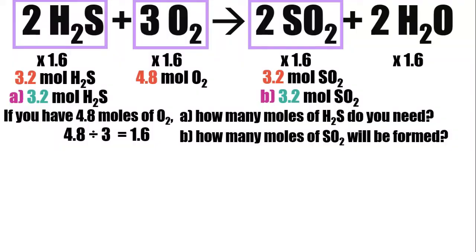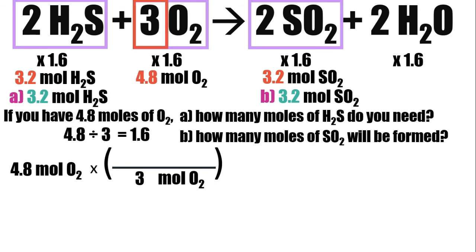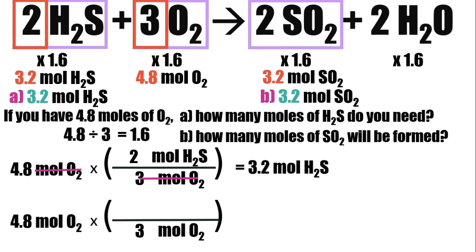Now, let's try the dimensional analysis. We start with the given: 4.8 moles of oxygen. Multiply this to the mole ratio. 3 moles of oxygen in the bottom to cancel the units, and 2 moles of hydrogen sulfide in the top, because that's what we're looking for. Cancel the units. This will give us 3.2 moles of hydrogen sulfide.